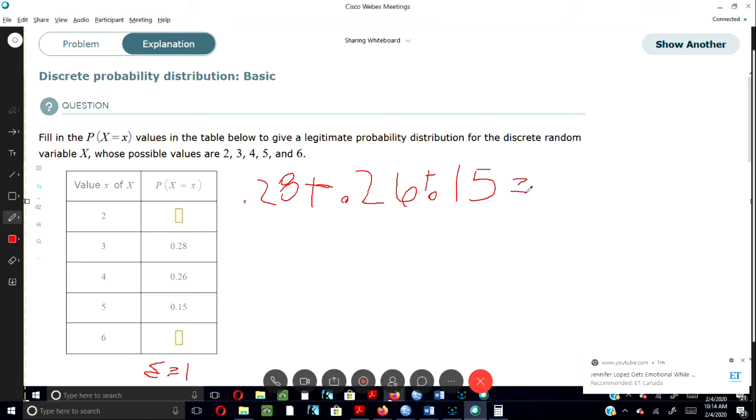So we'll put .69. Now, since we know the sum has to equal 1, let's subtract 1 minus .69. That gives us .31.